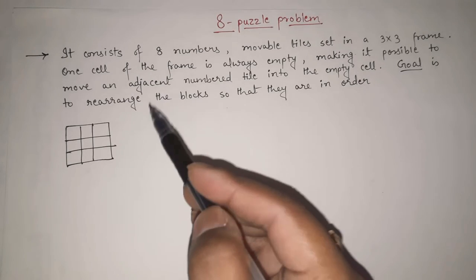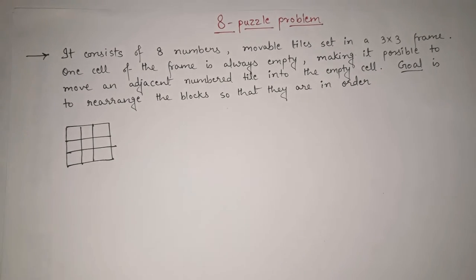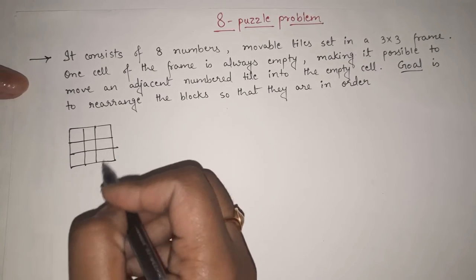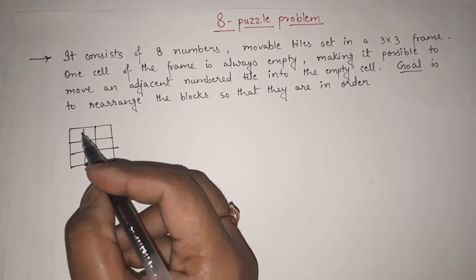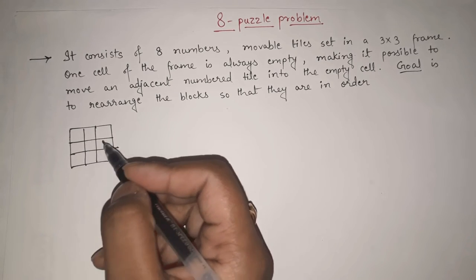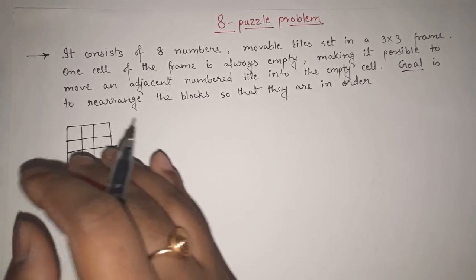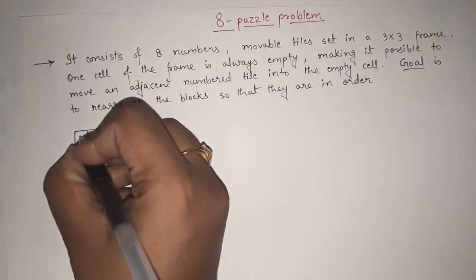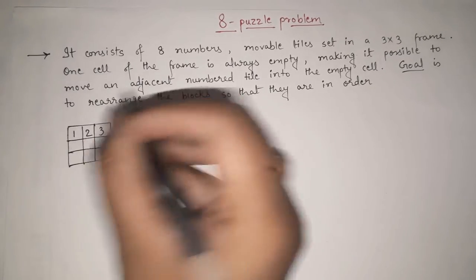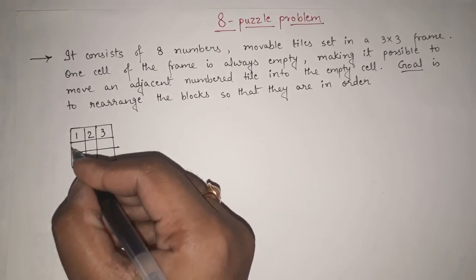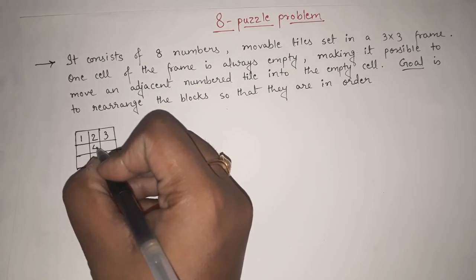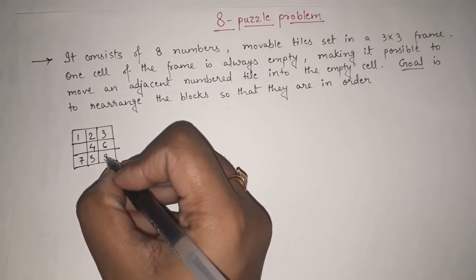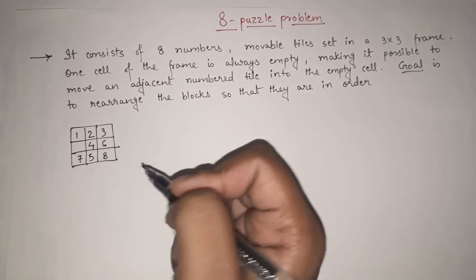The goal is to arrange the blocks so that they are in order. Any 3x3 frame will be there with any 8 numbers present. Let me take one example: 8 numbers will be present and 1 box will be empty, so we arrange them randomly — 1, 2, 3, leave one blank, then 4, 6, 7, 5, 8. We have randomly arranged 8 numbers with one box empty.